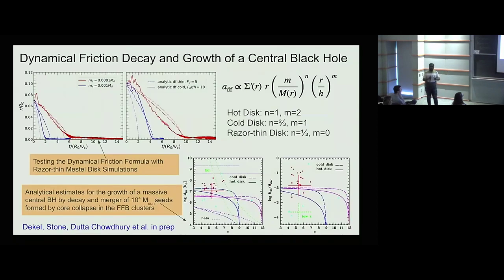Now let's think of this smooth disk. Going back to Avishai's talk, we can form massive seed black holes, about 10^4 solar masses inside these clusters. If these clusters are stripped and we have a smooth medium formed, what will happen to these black holes? These black holes can sink to the center of the disk by dynamical friction. If you want to do an analytical estimate of dynamical friction from a smooth disk, there's actually no textbook formula to do that.